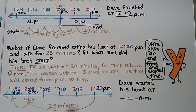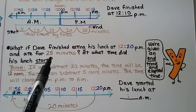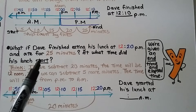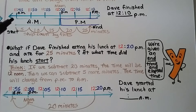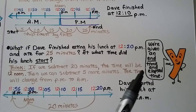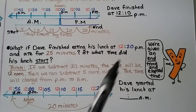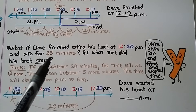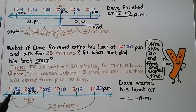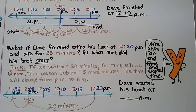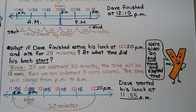What if Dave finished eating his lunch at 12:20 p.m. and ate for 25 minutes? At what time did his lunch start? Now we're given an end time and elapsed time and need to find the start time. Starting at 12:20, if we subtract 20 minutes, that gets us to 12 noon. We need 25 total, so we subtract 5 more, putting us at 11:55 a.m. — the time changes from p.m. to a.m. because we're before 12 noon. Dave started his lunch at 11:55 a.m.